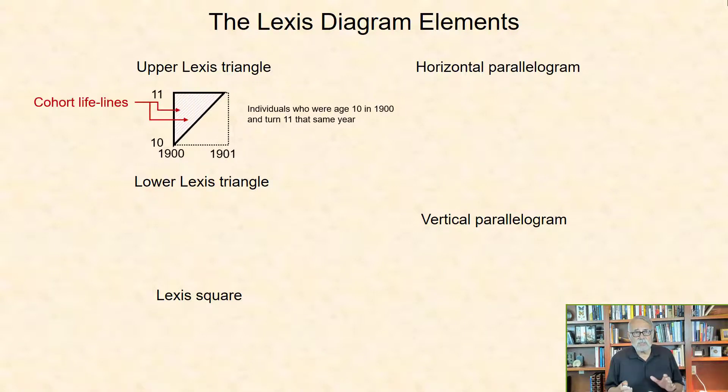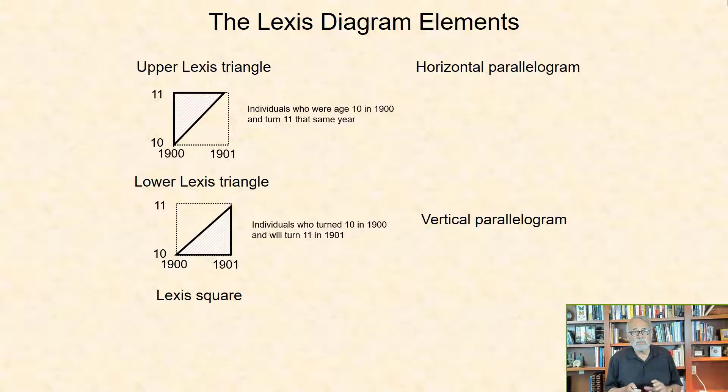The upper Lexis Triangle depicts individuals who were aged 10 in 1900 and turned 11 that same year.